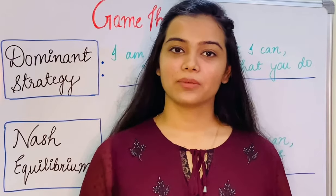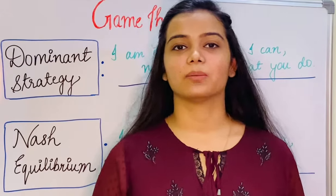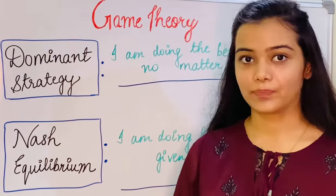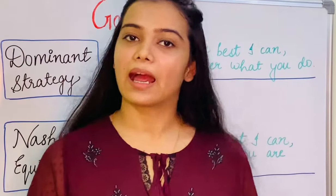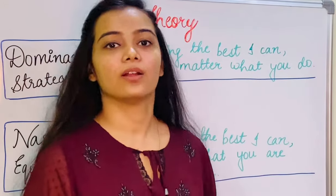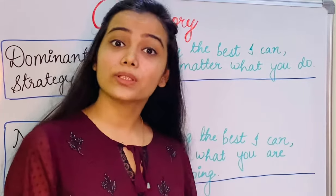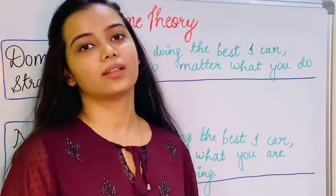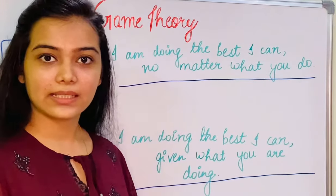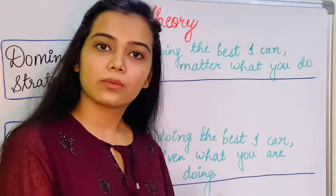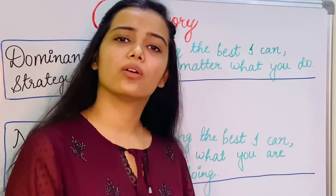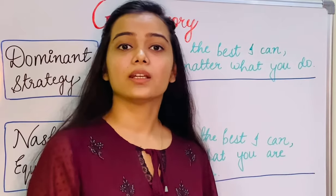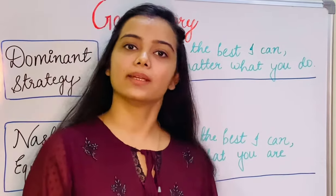Hi guys, today we are going to discuss Nash Equilibrium and Dominant Strategy. Now, Dominant Strategy is basically: I am doing the best I can no matter what you do, or you are doing the best you can no matter what I do. Whereas Nash Equilibrium is: I am doing the best I can given what you are doing, or you are doing the best you can given what I am doing. Let's understand these concepts with the help of some examples.